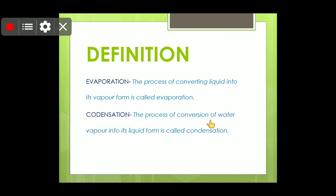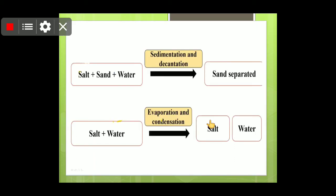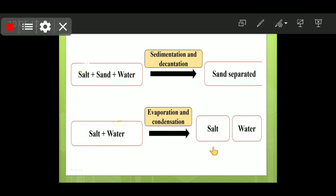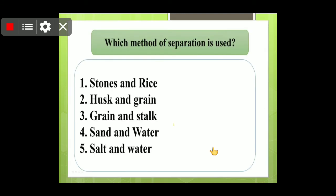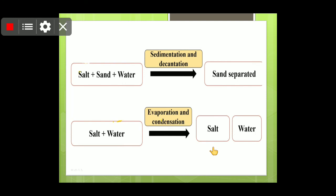As you can see in the flow chart, to separate salt, sand, and water: the first step is sedimentation followed by decantation, which separates the sand from the mixture. What remains is salt and water, which we separate by evaporation — the water evaporates and the salt remains in the container. Using different methods we can separate mixtures of more than two components. Since salt is soluble in water, we get it by evaporation and condensation.